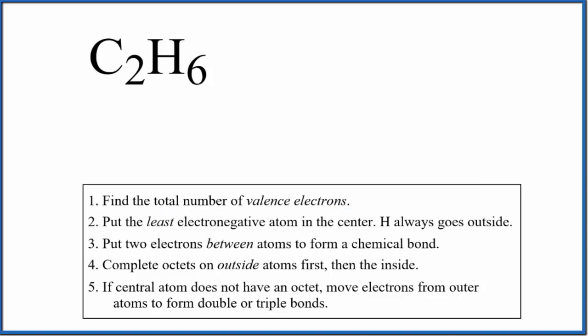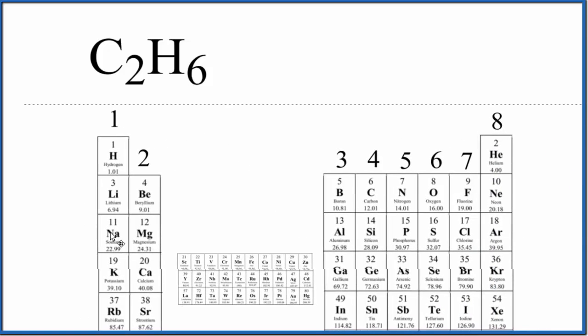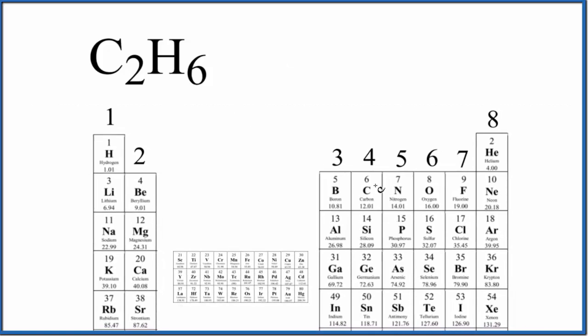The periodic table can be helpful. So here's the periodic table, and we find carbon right here. Carbon's in group 14, sometimes called 4A, so carbon has four valence electrons. We have two carbons, plus hydrogen right here, that's in group 1. All of these have one valence electron, so 1 times 6, that gives us 8 plus 6, 14 total valence electrons for the C2H6 Lewis structure.